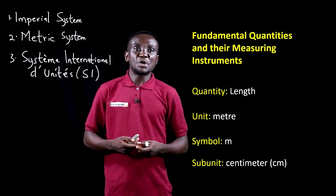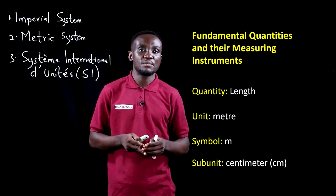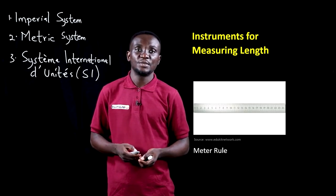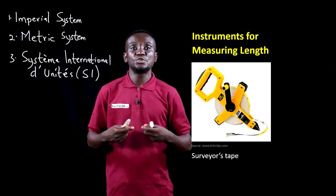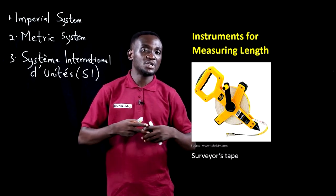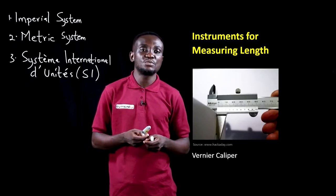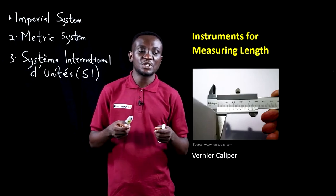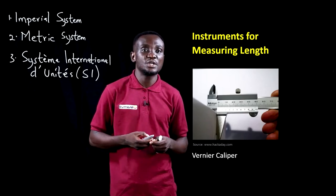When it comes to measuring length, they adopted the meter, with the symbol m, as the unit, and the subunit is the centimeter. The instruments for measuring length include the meter rule, the surveyor's tape for measuring large distances in major constructions, and the vernier calipers to measure the length of relatively small objects, such as the thickness of a wire.